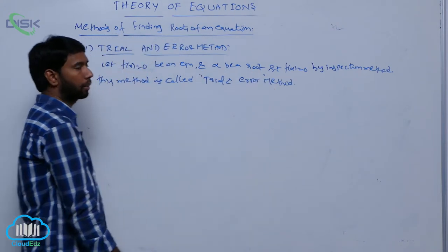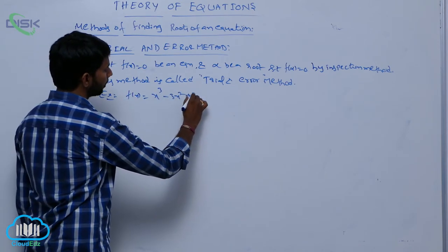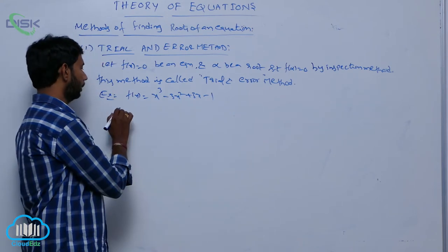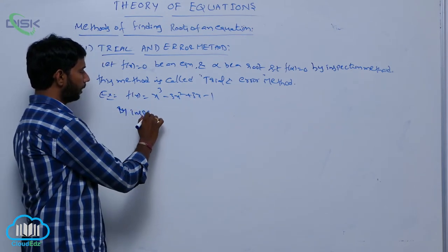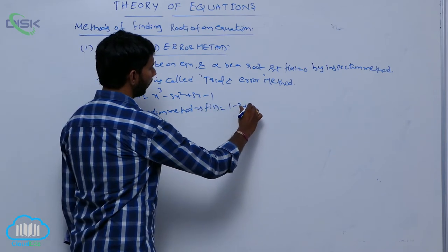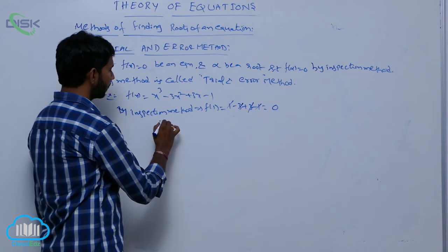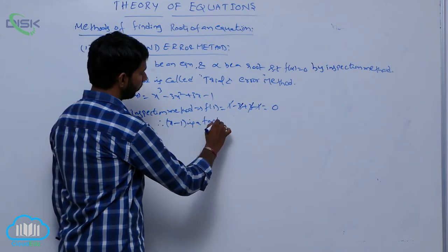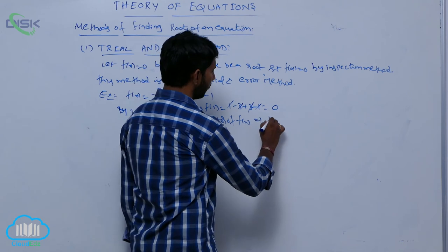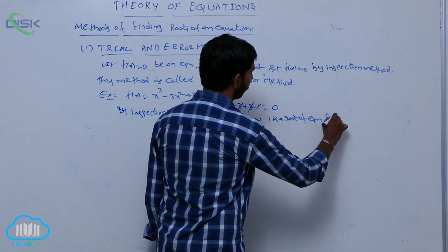For example, f of x is equal to x cubed minus 3x squared plus 3x minus 1. By the trial and error method, f of 1 is equal to 1 minus 3 plus 3 minus 1. Here, minus 1 plus 1 gets cancelled, and minus 3 plus 3 gets cancelled, giving 0. Therefore, x minus 1 is a factor of f of x, which implies 1 is the root of the equation f of x equal to 0.